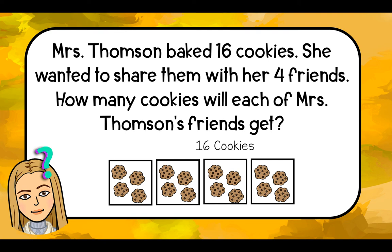Now we need to find out how many cookies each friend gets. We need to count how many cookies went into a box. I see one, two, three, four cookies in each box. 16 divided by four equals four. I know that's true because four times four equals 16. Each friend will get four cookies.